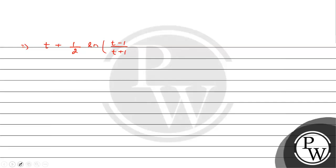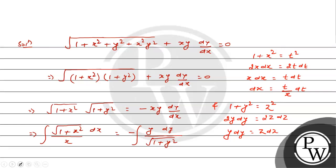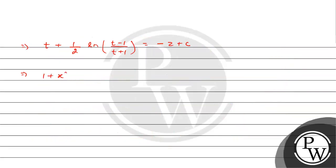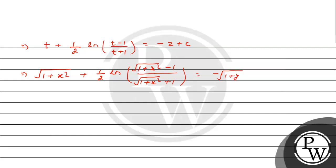This gives t plus (1 by 2) ln |(t minus 1)/(t plus 1)| equals minus z plus c. Now putting back the values: t equals square root of (1 plus x squared) and z equals square root of (1 plus y squared), we get square root of (1 plus x squared) plus (1/2) ln |(square root(1+x²) minus 1)/(square root(1+x²) plus 1)| equal to minus square root of (1 plus y squared) plus c.